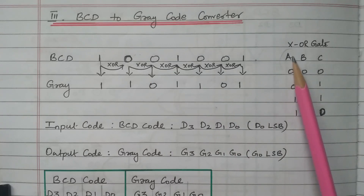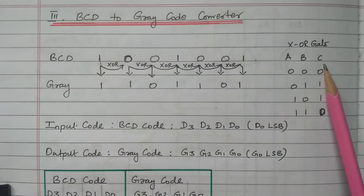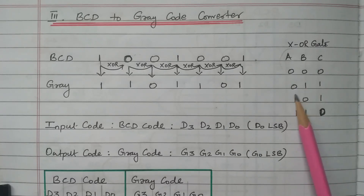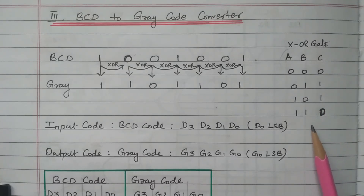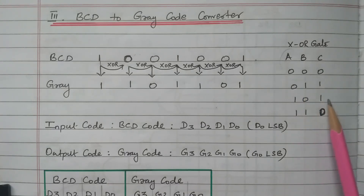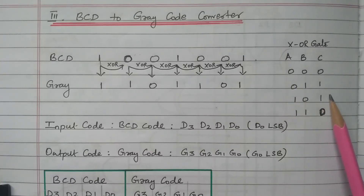What is the XOR operation? We will see the XOR gate. The inputs are A and B, and the output is C. The four combinations are: 0,0 gives output 0; 0,1 gives output 1; 1,0 gives output 1; 1,1 gives output 0. So from this truth table, if the inputs are equal (0,0 or 1,1), the output is 0. If the inputs are different (0,1 or 1,0), the output is 1. This is the nature of the XOR gate.